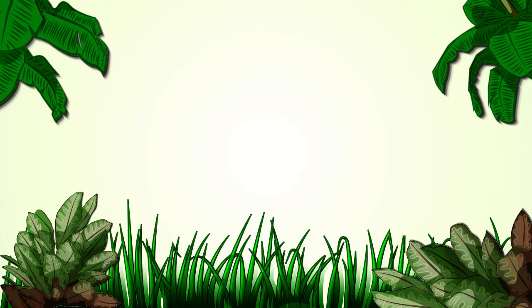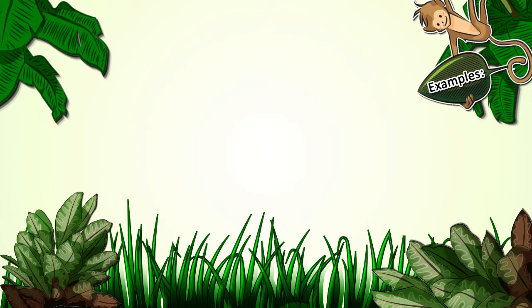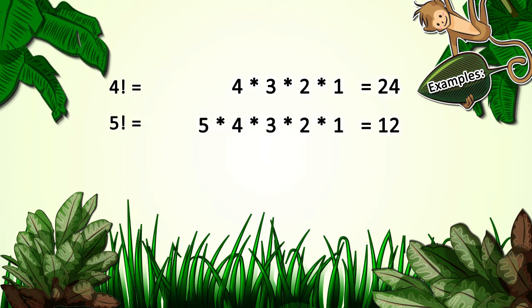Some easy examples include 4 factorial, which equals 4 times 3 times 2 times 1, equaling 24. 5 factorial equals 5 times 4 times 3 times 2 times 1, equaling 120. 6 factorial equals 6 times 5 times 4 times 3 times 2 times 1, equaling 720.